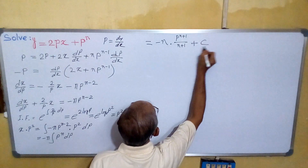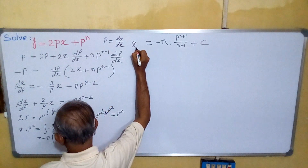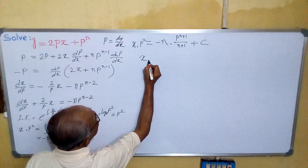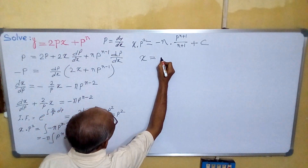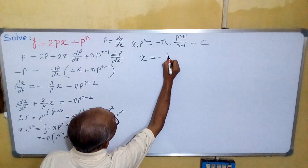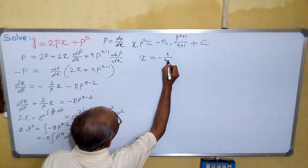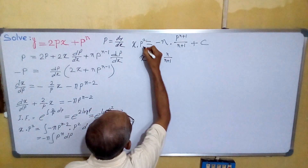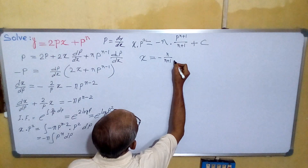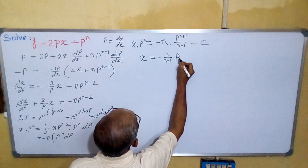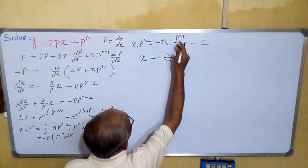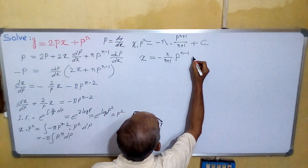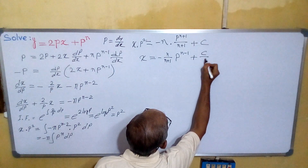So we are getting x times p squared equals this expression. From here we can write x equals minus n divided by n plus 1 times p to the power n minus 1 — since we bring p squared to the other side, the exponent becomes n plus 1 minus 2, that is n minus 1 — plus C divided by p squared.